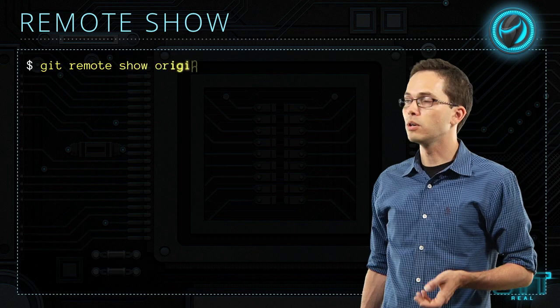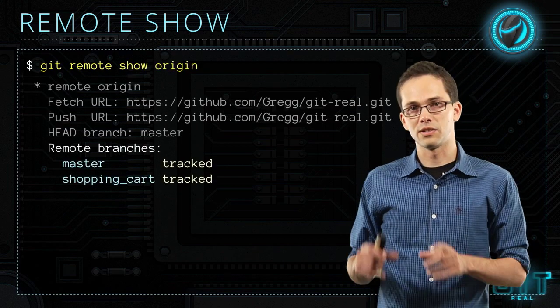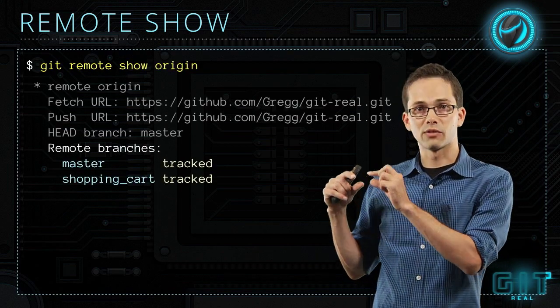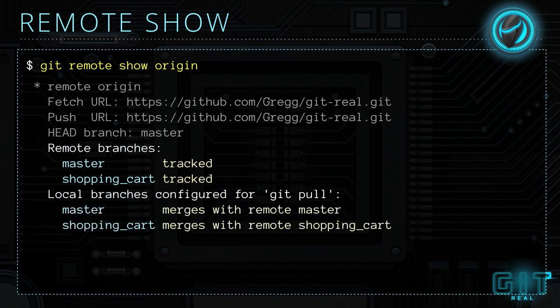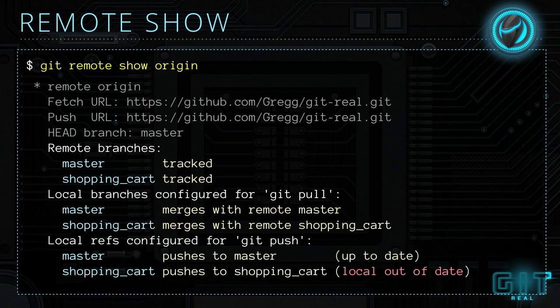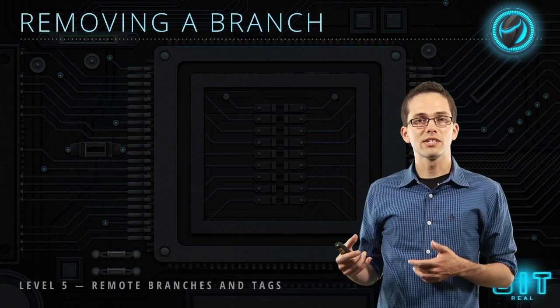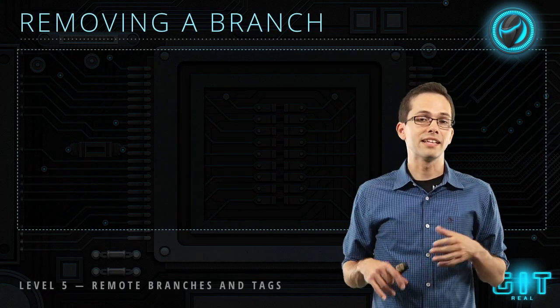One of the most useful commands for working with remote branches is `git remote show origin`. This shows all remote branches and whether they're tracked, all local branches and which remote branches they merge with, and all local branches configured for `git push`. The cool part is it even goes out to the server and checks if any local branches are out of date — here we can see that our shopping cart branch is out of date.